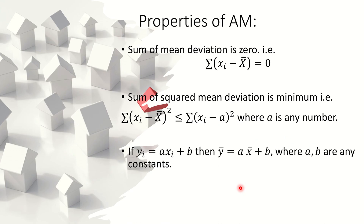The next property is: if the data is transformed linearly — yi equals a times xi plus b — then the mean of the transformed data y-bar can be found directly from the mean of the existing data. You don't need to find the mean again; simply transform the given mean accordingly. The proof: summation yi equals a times summation xi plus nb; dividing both sides by n gives y-bar equals a times x-bar plus b.